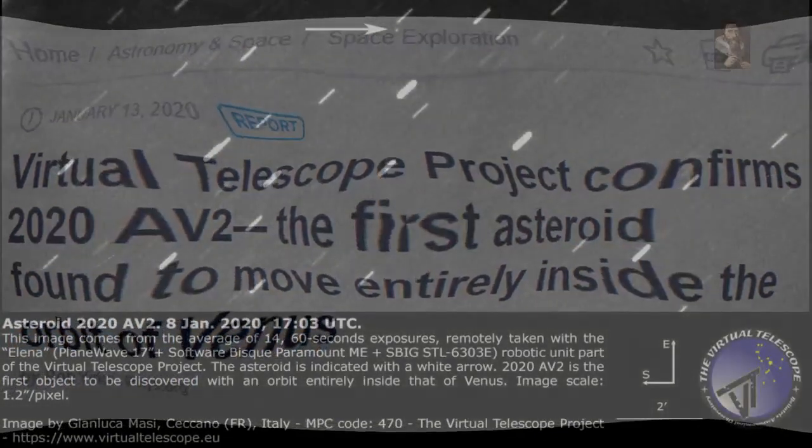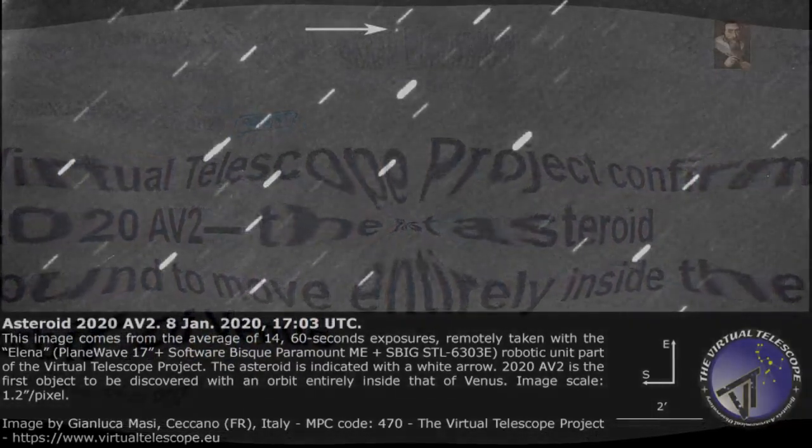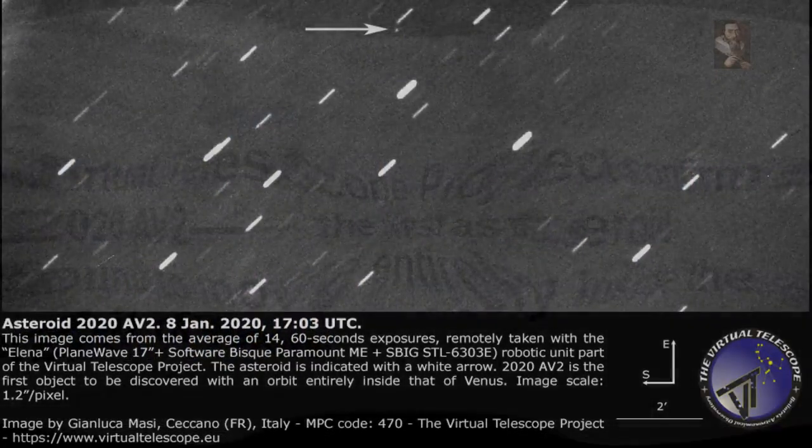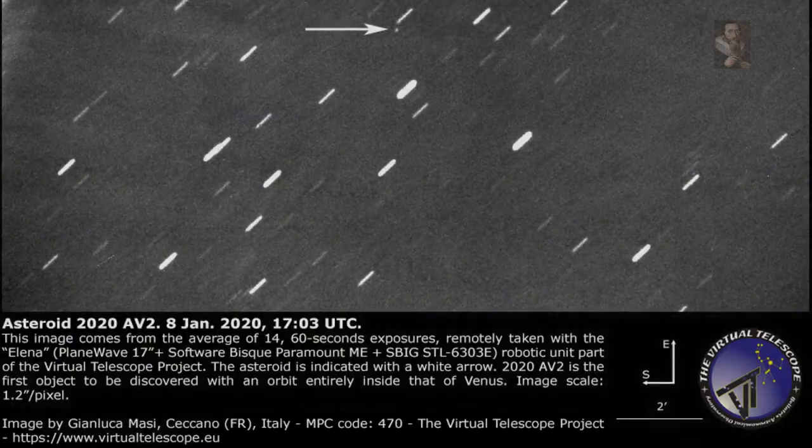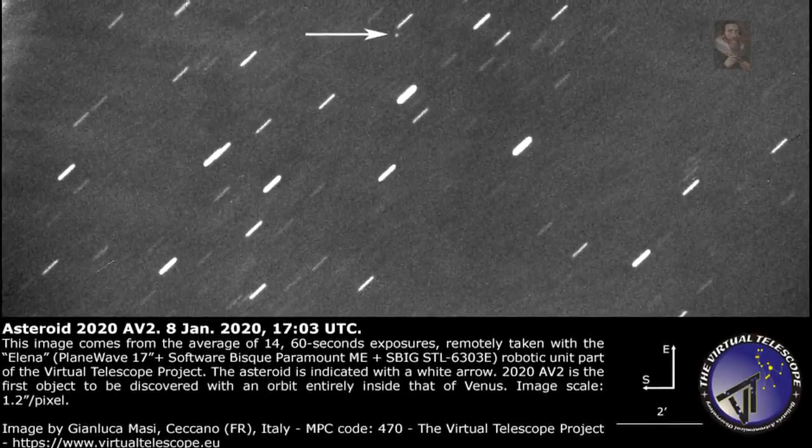Once he had a finished photograph in hand, he sent it to the Minor Planet Center. Several hours later, his confirmation was posted on the Minor Planet Center circular with its new name, 2020AV2.